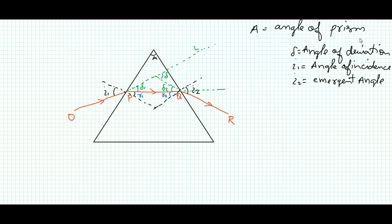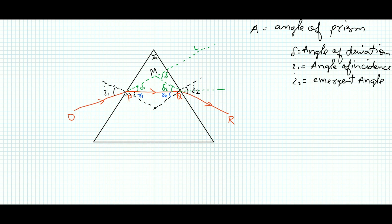So delta one is the first deviation and delta two is the second deviation, and delta is the total deviation. Here r1 is the angle of refraction for the first surface and r2 is the angle of incidence for the second surface. The emergent ray is called so because light strikes the prism, enters it, and emerges from the second surface as ray QR. I name the intersection point M.